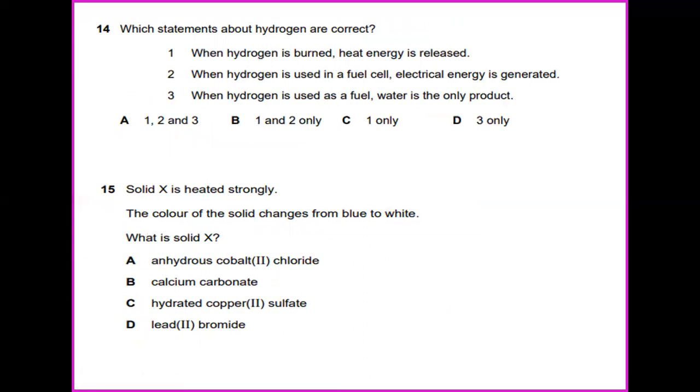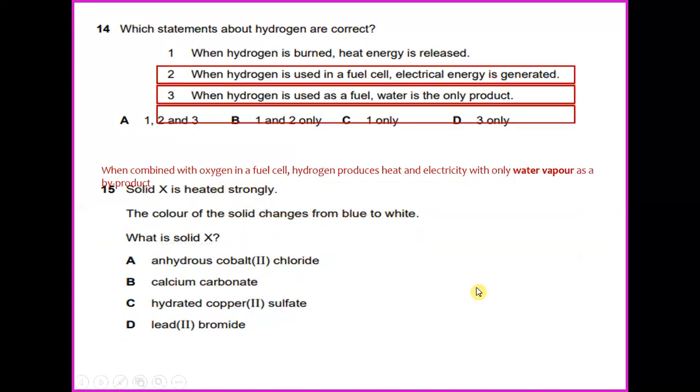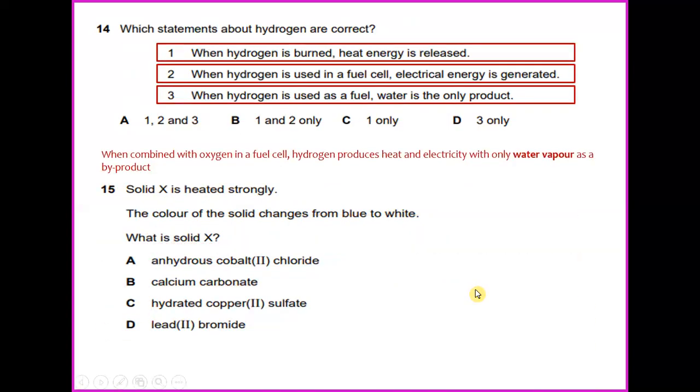Which statements about hydrogen are correct? When hydrogen is burned, heat energy is released. Correct. When hydrogen is used in a fuel cell, electrical energy is generated. Correct. When hydrogen is used as a fuel, water is the only product. Correct. When combined with oxygen in a fuel cell, hydrogen produces heat, which is the answer for number 1, and electricity with only water vapor as a byproduct. That will be the answer for number 2 and number 3. So the answer for this is A.